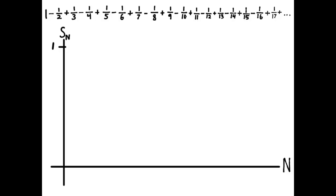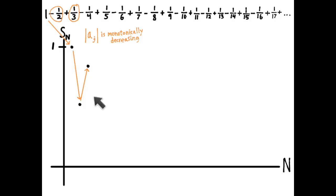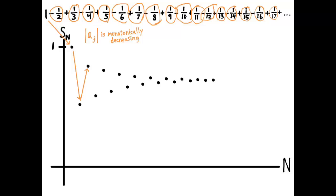The first partial sum is just 1, the first term, so I'll put a dot at level 1. When I add the second term to get the second partial sum, I go down by one half of a unit to get s₂. Then to get the next partial sum, I have to go up by a third of a unit. But a third has smaller magnitude than a half because the magnitudes of these terms are monotonically decreasing, so my step up is smaller than my step down. My step down from the third term to the fourth term is smaller still, meaning s₂ is a lower bound and s₃ is an upper bound for all subsequent terms. The question is: do these partial sums eventually converge to a single number?